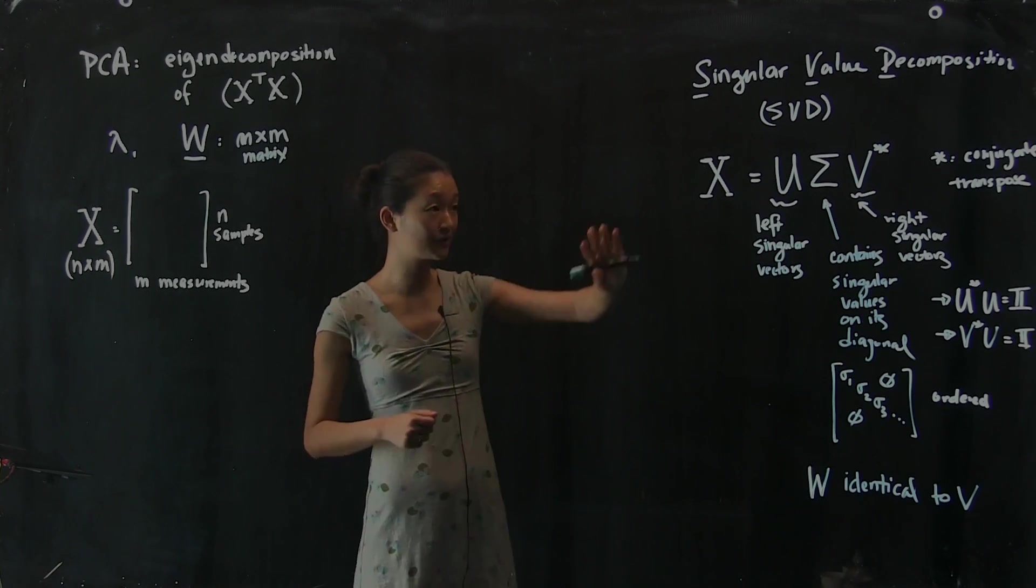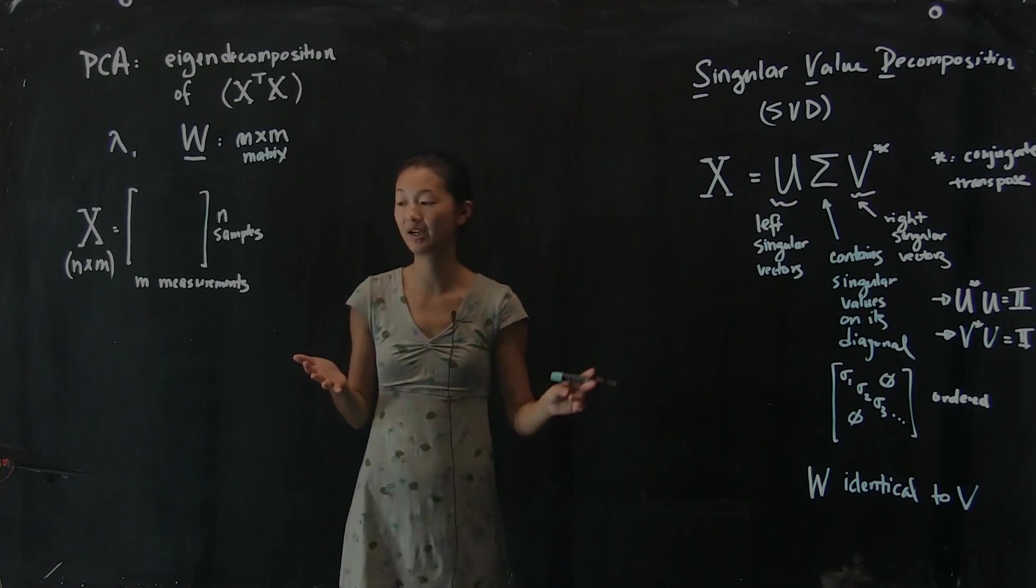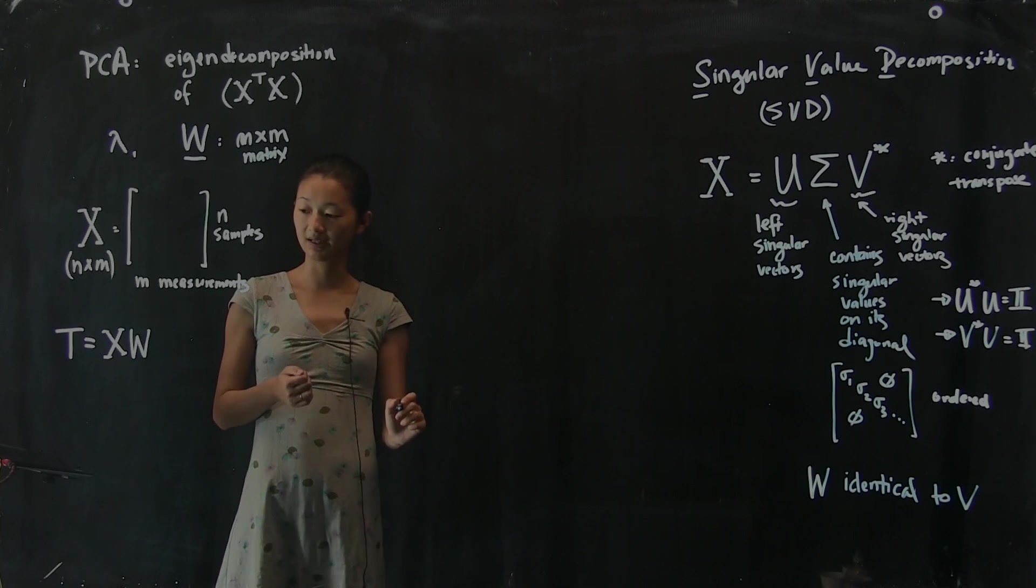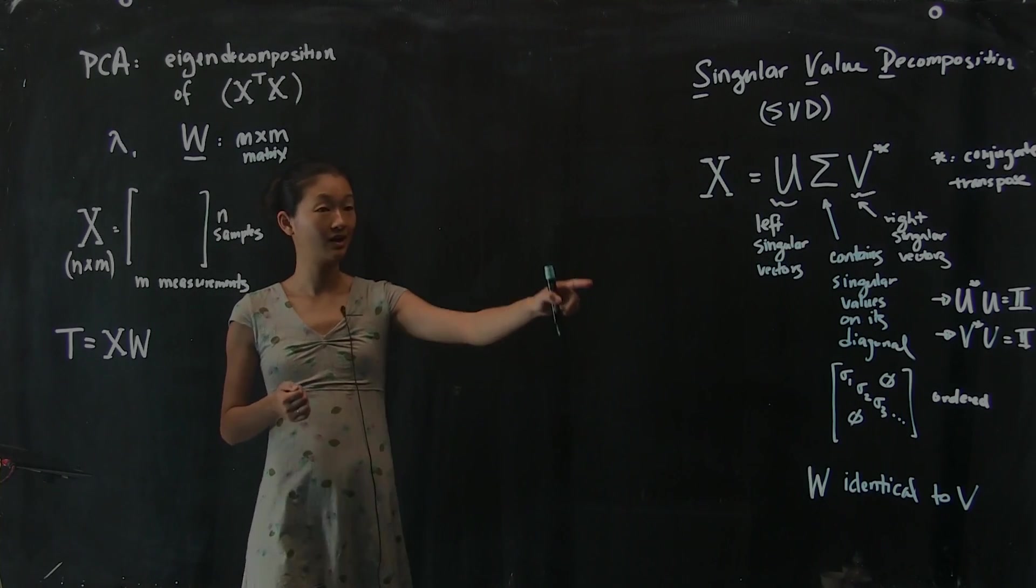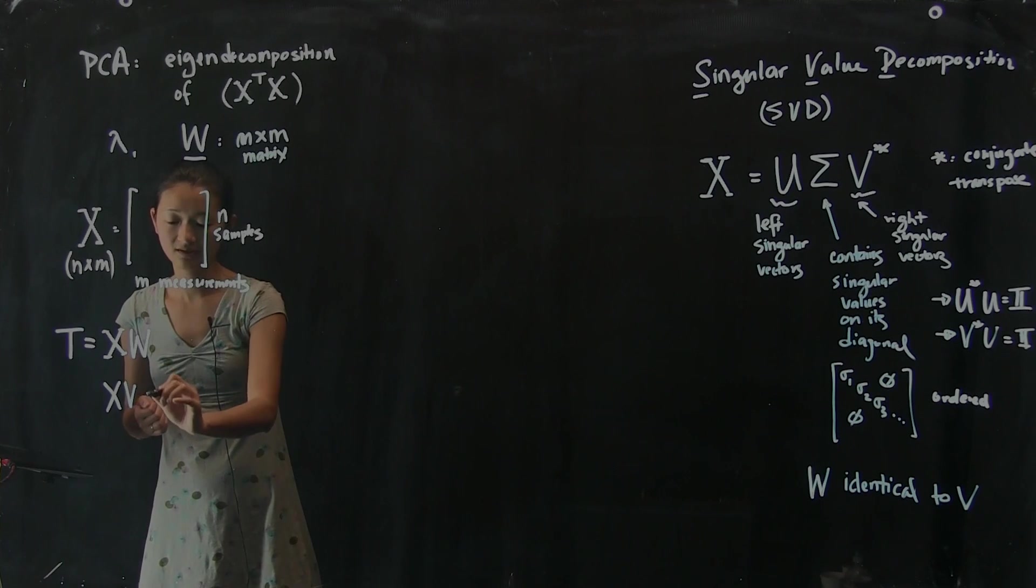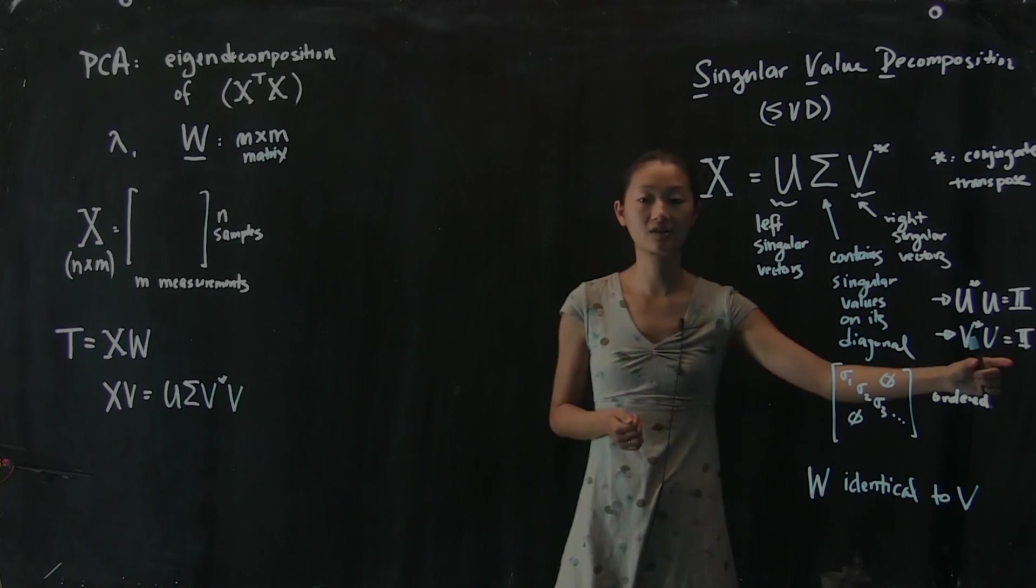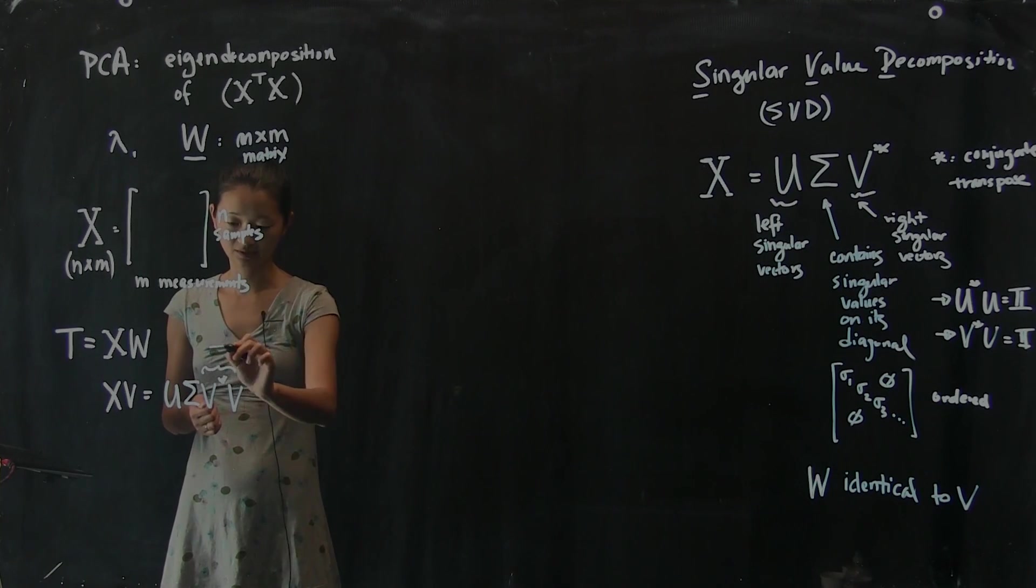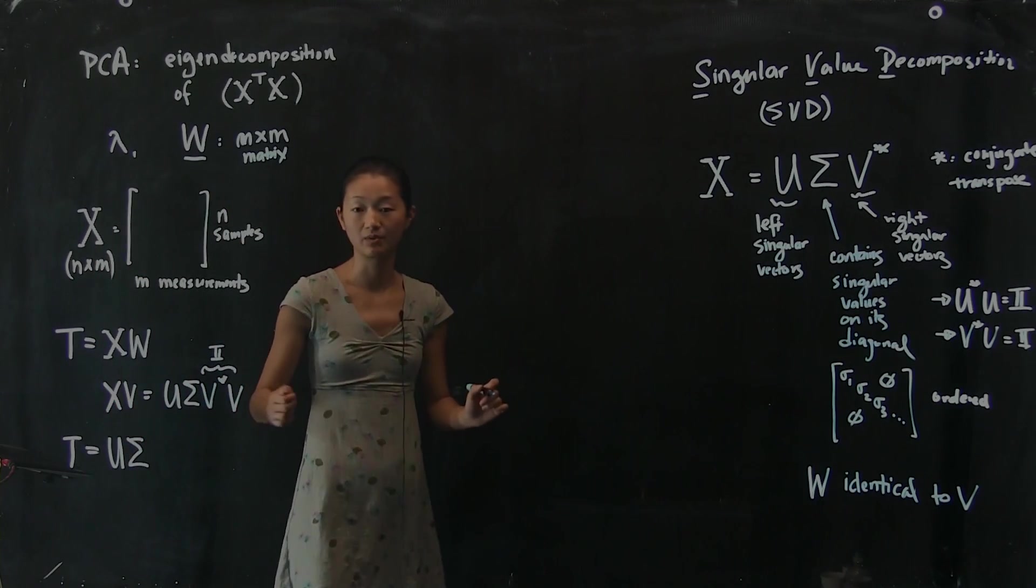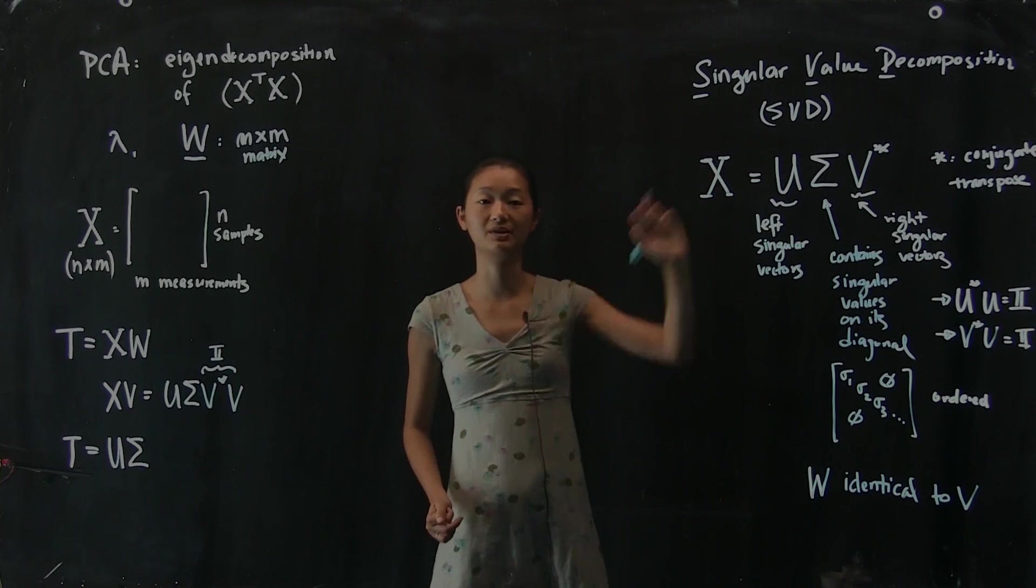So what you can see is that after you've done this singular value decomposition of data matrix X, remember we had the loadings earlier, the thing that we call T. So T was equal to X times W. And since W is the same as V, I have X over here. I'm going to right multiply it with V. So X times V equals U sigma V star V. But remember that V star V is the identity matrix, and so this actually goes away. This equals the identity and we can ignore it. So T is just equal to U times sigma. So we get the loadings, we get the scores rather. We get the scores, the projections of our data onto the first couple of components for free after we've computed the singular value decomposition.